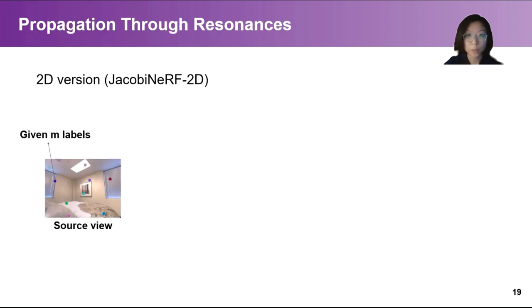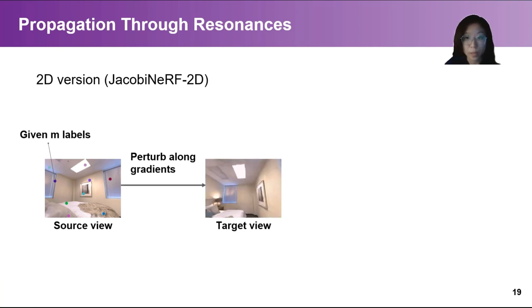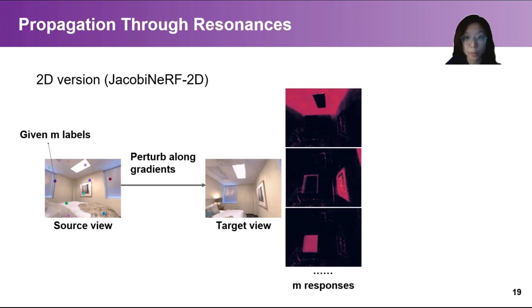For this purpose, we develop a method for propagating labels through resonances at test time, leveraging the shaped Jacobi NERF. First, we perturb the NERF along the gradient of gray value of that pixel. Then we synthesize the target view from the perturbed NERF and calculate the perturbation response at each pixel. Finally, we assign target view pixels to the class generating the maximal response.